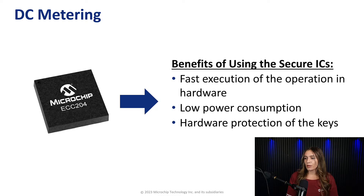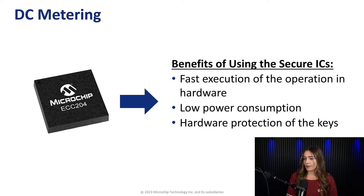We can use one of Microchip's secure ICs, like the ECC204 that you see here, to ensure the validity of JSON messages that communicate the measurements from DC meters. Our secure ICs are also easy to implement within your design, with low power consumption, fast execution of operations in the hardware, and hardware protection for keys and tamper-resistant packaging.